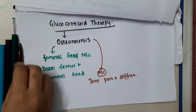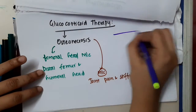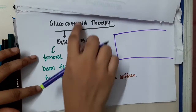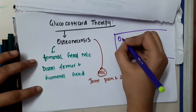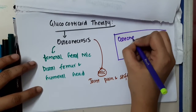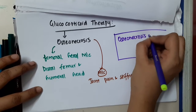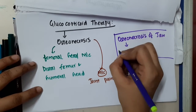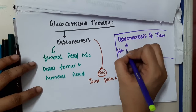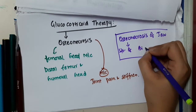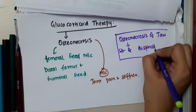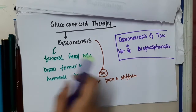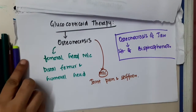Next step: osteonecrosis of the femoral head is caused by glucocorticoid therapy, whereas osteonecrosis of the jaw is seen as a side effect associated with the use of bisphosphonates. Thank you for watching.